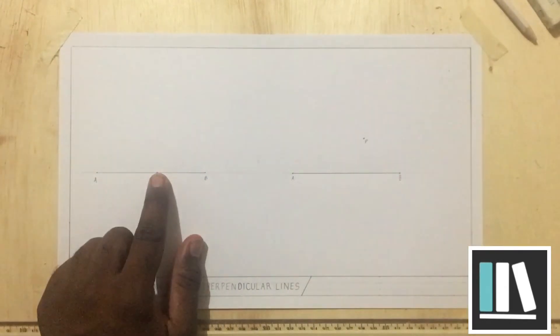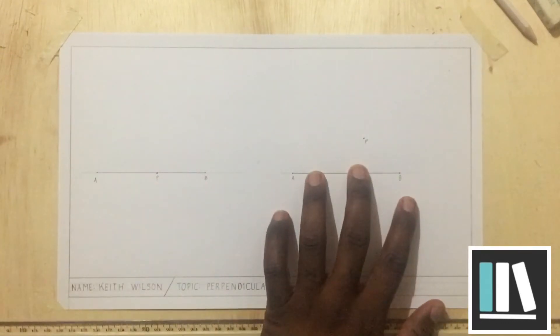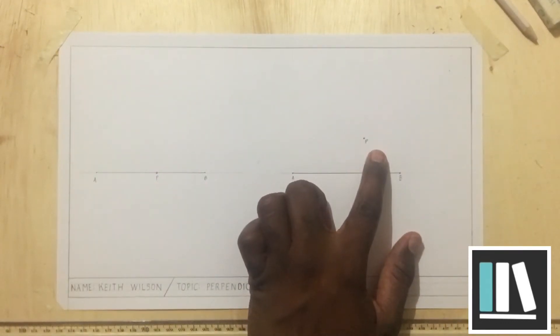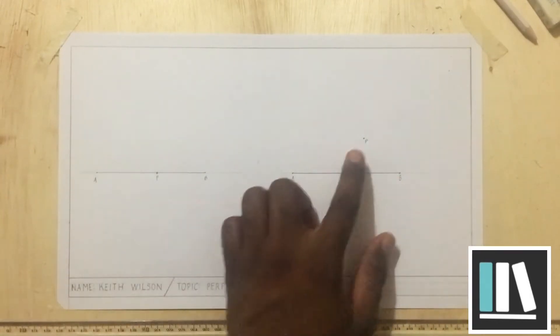Now, on the first line there is a point P. At the second line there is a point P that is not on the line. So this point is on the line, this point is not on the line.